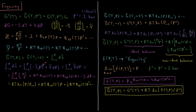Our molar volume of a non-ideal gas — if we take the compressibility equation, multiply both sides by RT over P — we get a series in terms of V-bar. The molar volume is RT over P (the ideal gas molar volume), plus RT times the second virial coefficient, plus RT times the third virial coefficient times P, and so on.